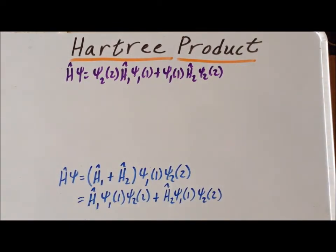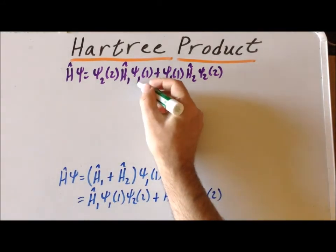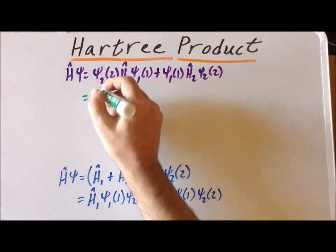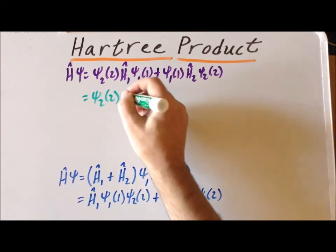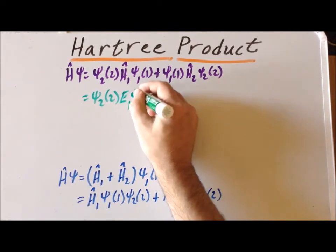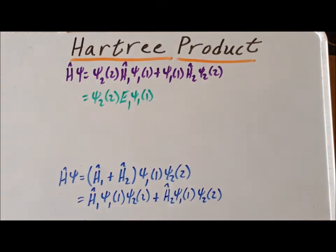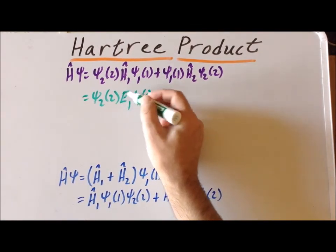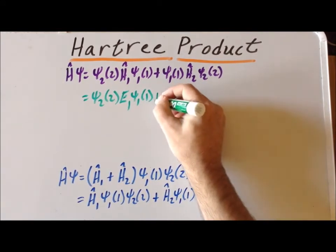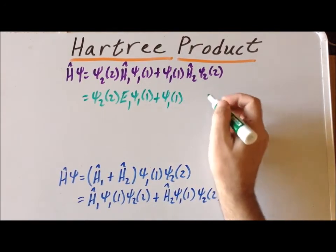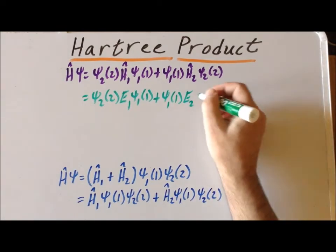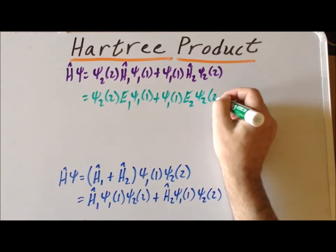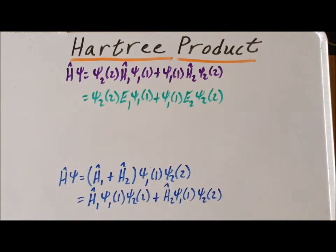Next, we can use the fact that we know that ψ₁ is an eigenfunction of Ĥ₁. So ψ₂ of 2 stays the same in front, but now we know that when the operator acts on ψ₁, what we get is E₁ times ψ₁. And in the process, we've eliminated the operator. So the operator acting on ψ₁ gives E₁ the eigenvalue times ψ₁. And we can use the same reasoning for the second term because we know that ψ₂ is an eigenfunction of Ĥ₂. So we can replace that by E₂, a number, times ψ₂. And now we have an expression that doesn't include any operators. It merely includes functions and numbers, which we know very well how to work with.